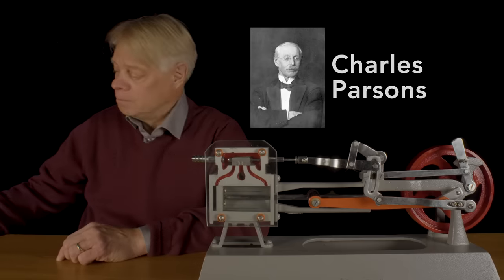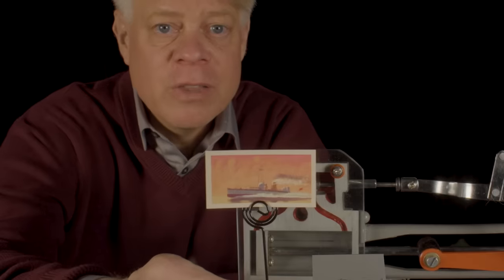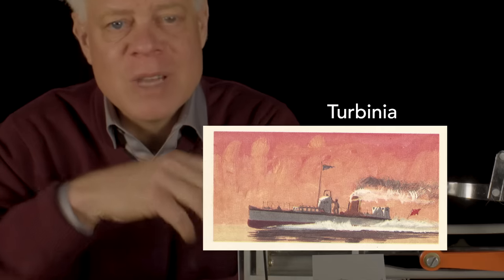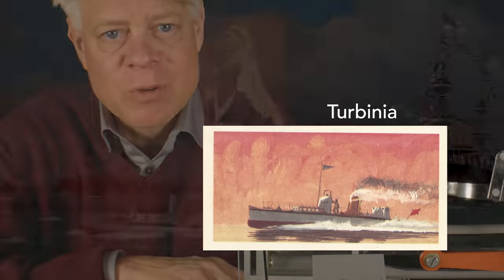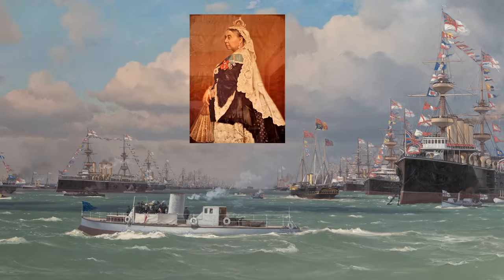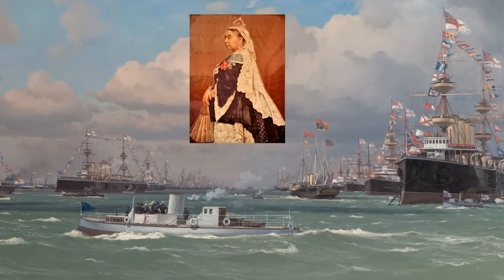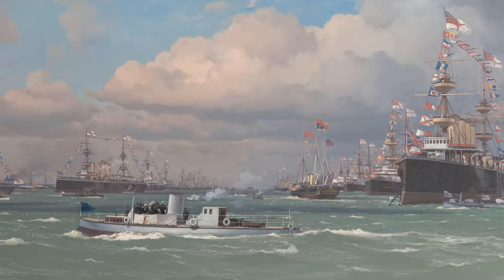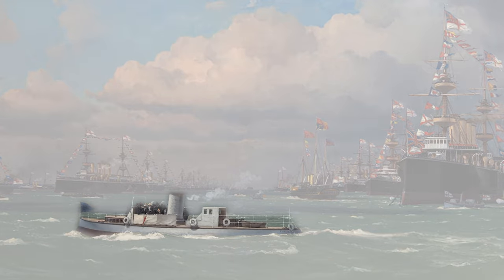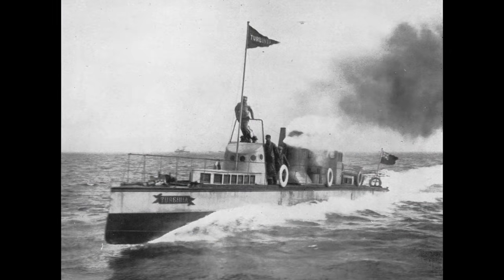And so, in frustration, he built a ship to convince everyone of the superiority of his engine. This tea card — a trading card packaged with teas sold in the 1950s and 60s — features the Turbinia, as Parsons named his small ship. To attract attention, he crashed a naval display honoring Queen Victoria's Diamond Jubilee in 1897. Throughout the fleet of ships, Parsons buzzed around in the Turbinia, outpacing the Navy's fastest patrol boats.